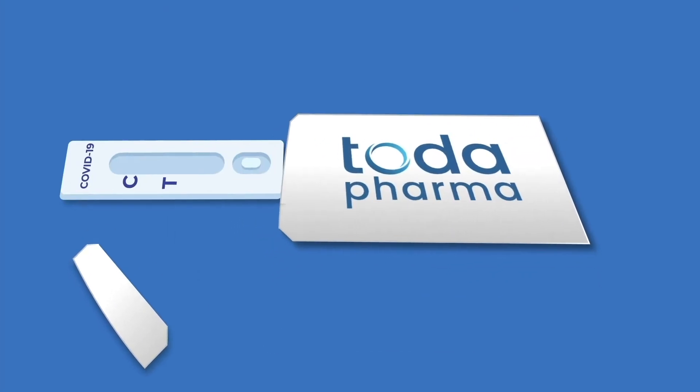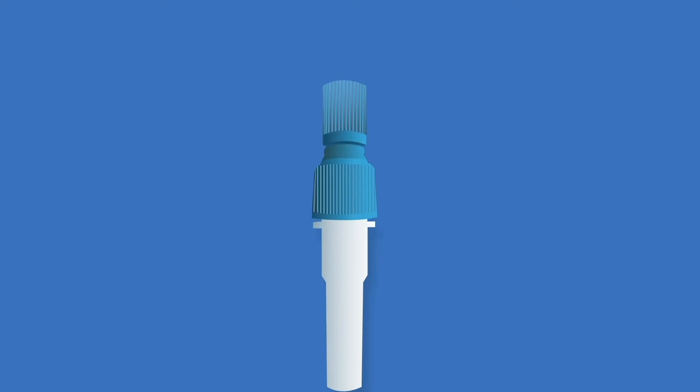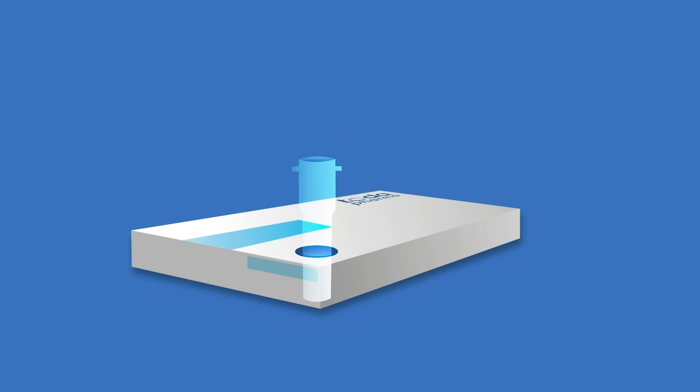Open the sachet containing the test cassette, then unscrew the blue cap from the vial, place the vial in the pre-punched opening on the box, and remove the swab from its packaging.